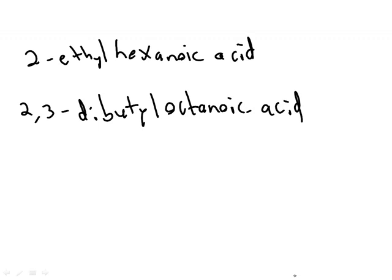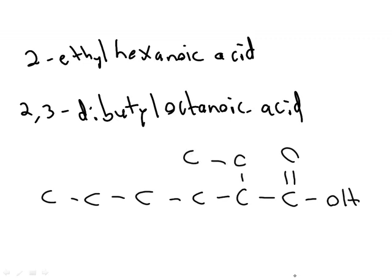Starting with the top one, the easiest way to do this is just draw your functional group. That's carbon number one, two, three, four, five, six. So six carbons and at carbon number two is an ethyl group. Two-ethyl hexanoic acid. Hopefully that makes sense.